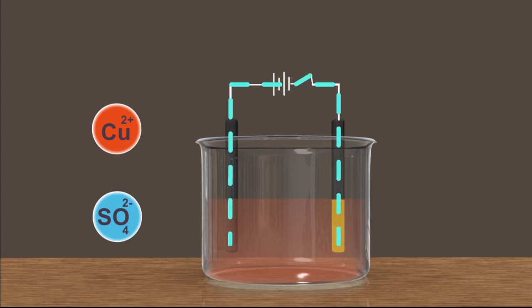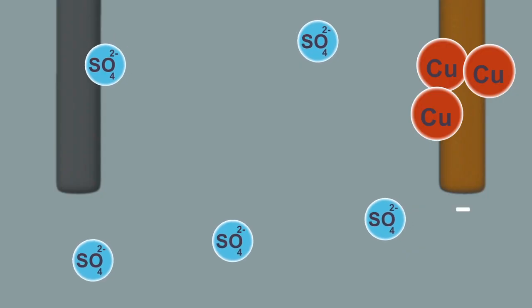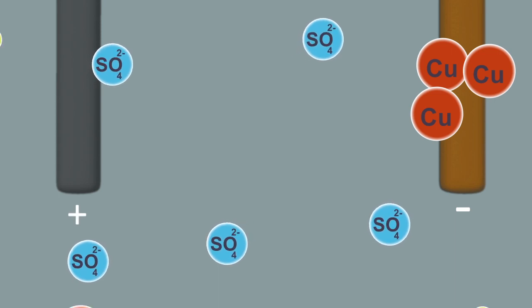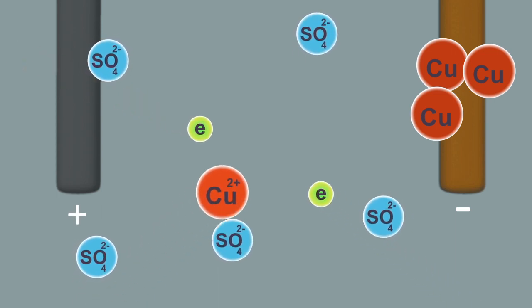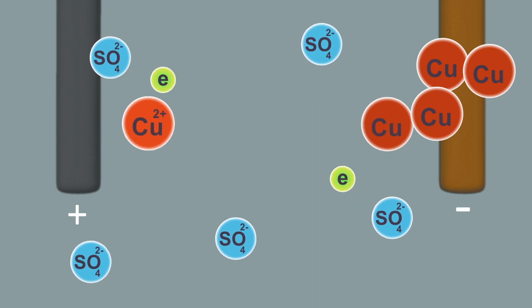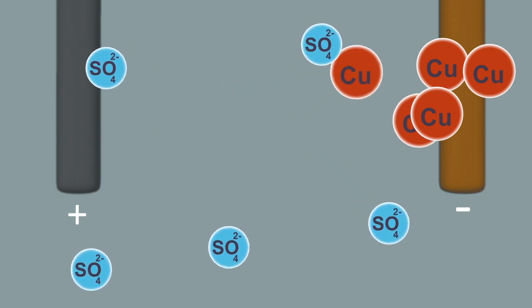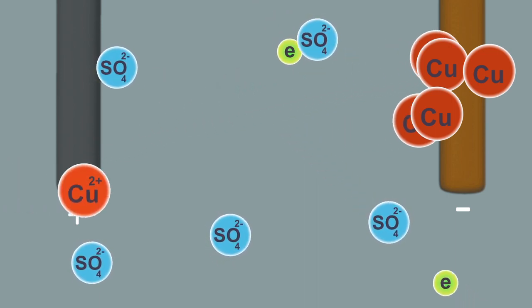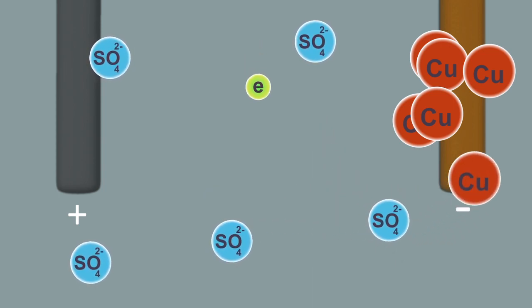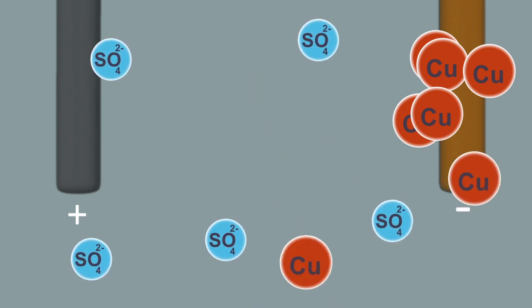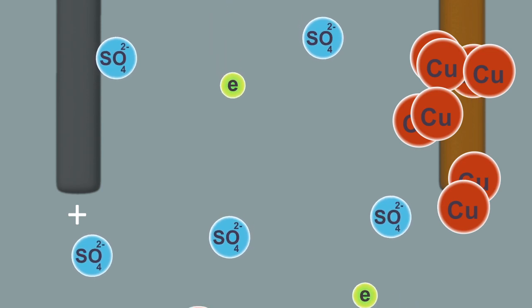We know that the solution contains both copper and sulfate ions. The copper ions in the electrolyte move to the negative electrode and accept two electrons from there. Then it becomes copper atom and deposits on the negative electrode.